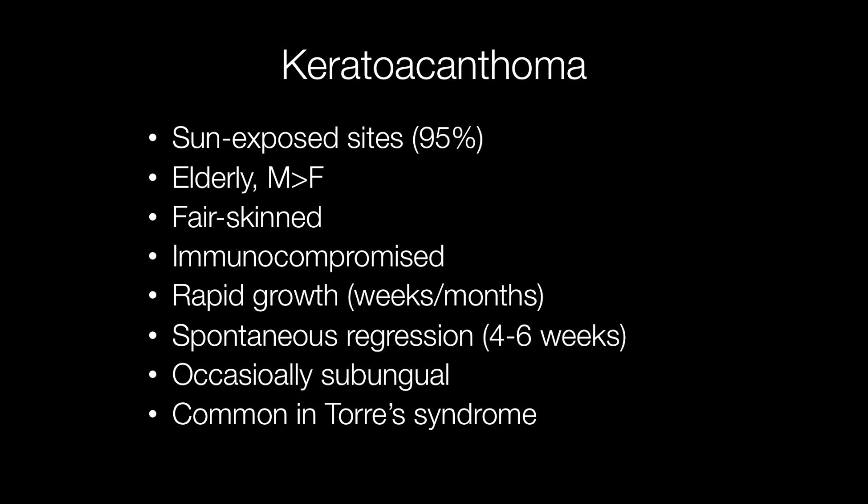Keratoacanthomas arise on sun-exposed sites in 95% of cases. They usually affect the elderly and males approximately twice as frequently as females. They also tend to affect fair-skinned people. Immunocompromised patients are at greater risk of developing keratoacanthomas. These lesions are associated with a number of syndromes, one being Torres syndrome.